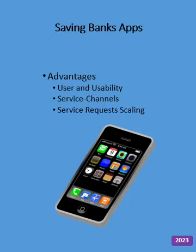Where do we need business and artificial intelligence? For example, in SavingBank apps, the advantage is we have the use and usability. We can control this and the service channels can be requested, and there are PMRs for that. We can work on the PMRs and structure our layout.